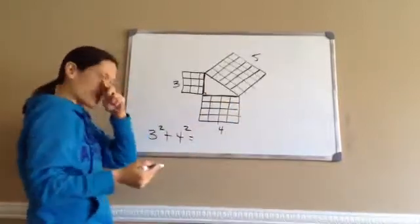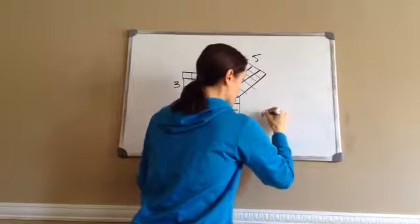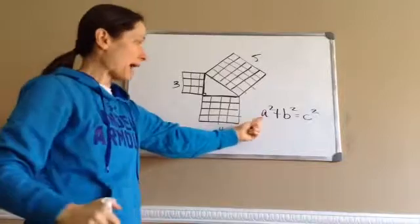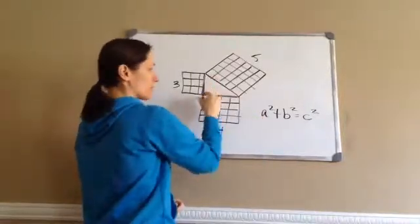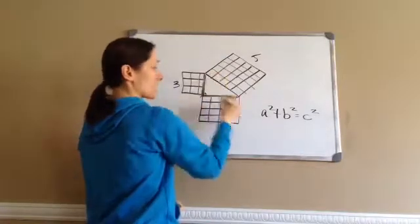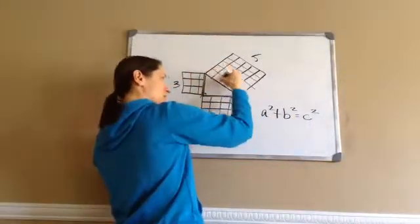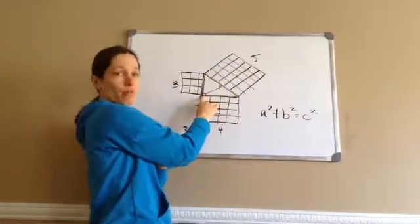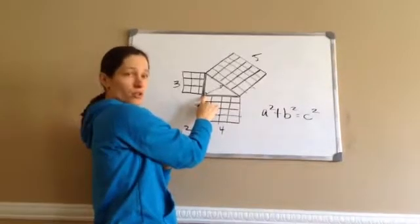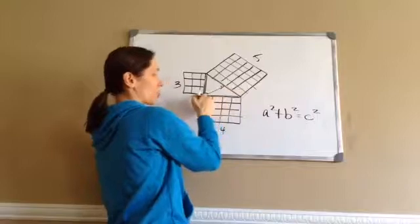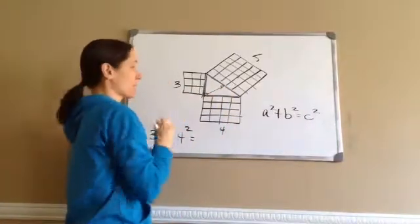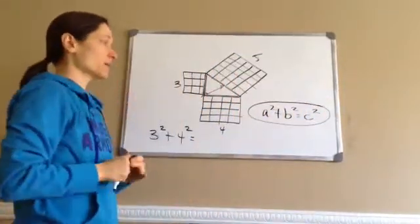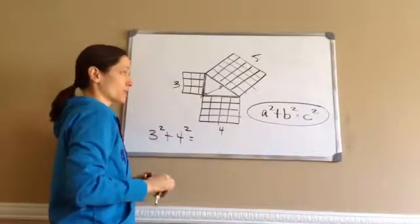So the Pythagorean theorem is: a squared plus b squared equals c squared. Now a is just one of these legs, b is just one of these legs, and c is always the tilted or slanted one that's across from the 90-degree angle. So c is always this line — it's across from the 90-degree angle. You need to write this down: a squared plus b squared equals c squared.